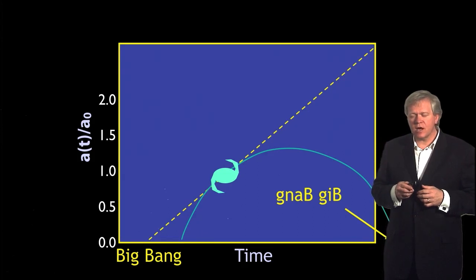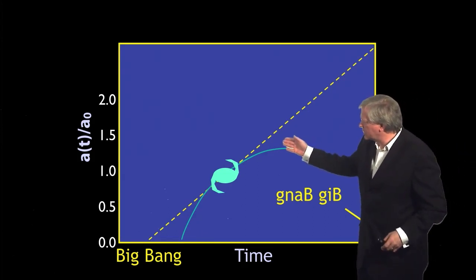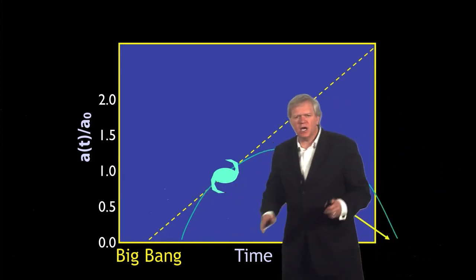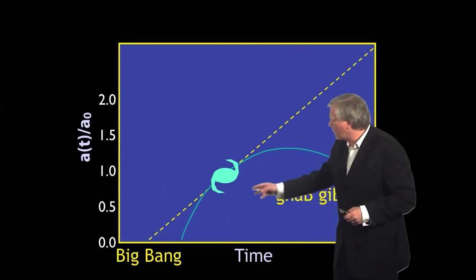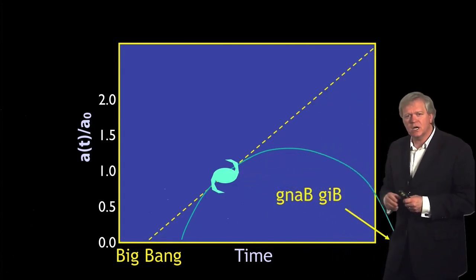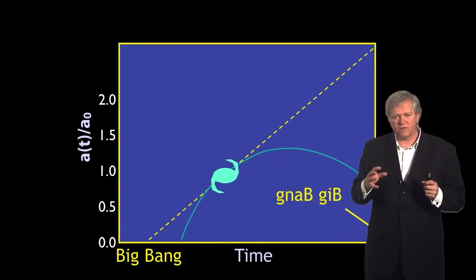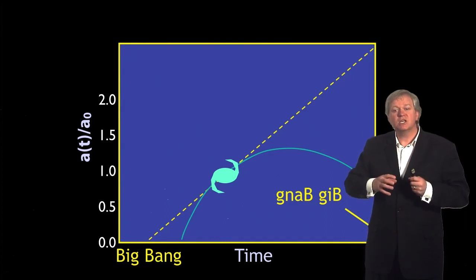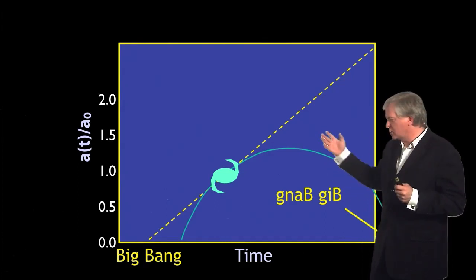The idea was to figure out if the universe was following the trajectory of the dotted line where there's not much stuff in it, or following the gray line where the universe has so much stuff in it that the universe stops expanding in the future and goes into reverse.